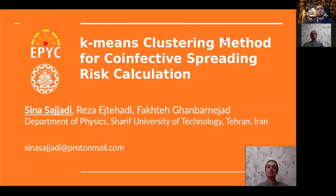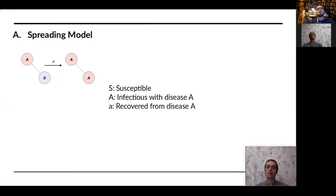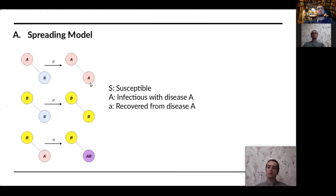Thank you for your attendance. I am Sina, a master's graduate at Sharif University of Technology, delighted to give a talk on k-means clustering. We have a spreading model consisting of two different diseases spreading. Disease A can infect a susceptible agent with probability P to an agent infectious with A. The same applies for B with the same probability. We also have co-infection, where an agent infected with B can infect an agent already infected with A with probability Q, to become an agent infectious with both AB. There is also a recovery process.